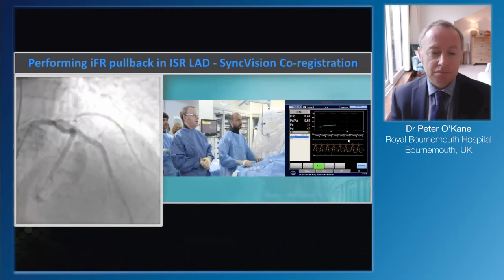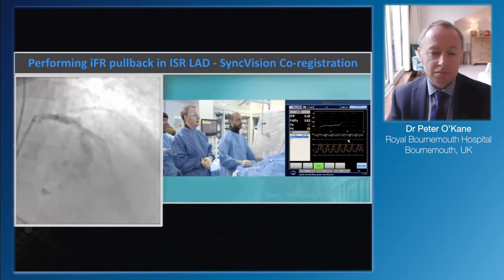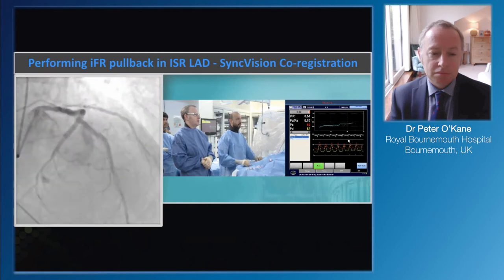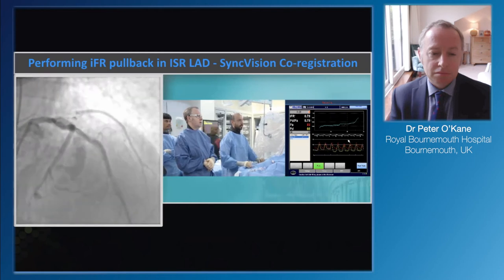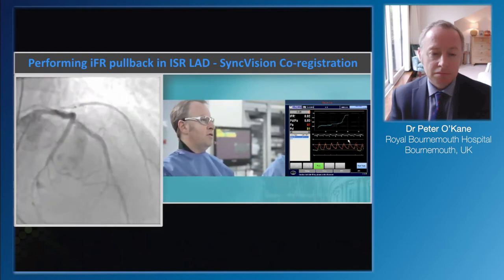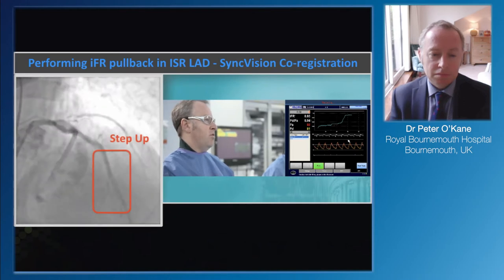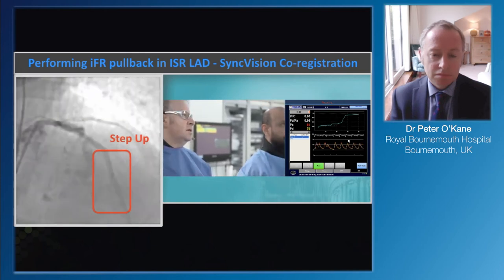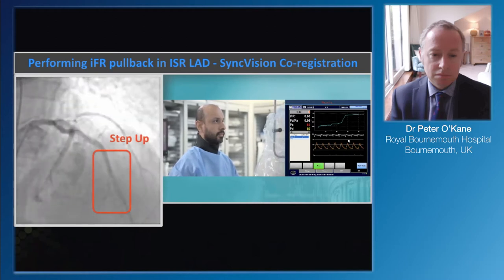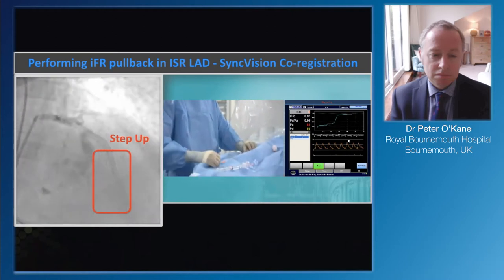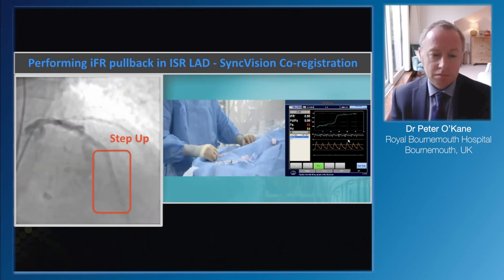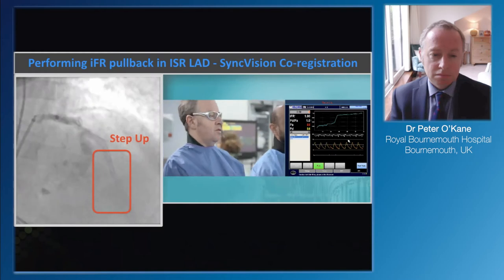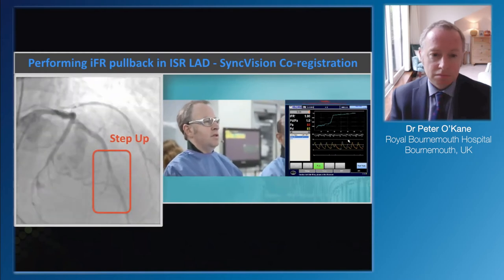We changed the fluoroscopy to 15 frames per second, which is necessary for the system to pick up the pullback of the wire. You see it jumping up - a big jump, which is actually a little bit more proximal to the stenosis, probably right on that severe lesion. There's no significant gradient more proximally. Coming back to the proximal vessel - we do a drift check and it's exactly one, so we're very happy with that.